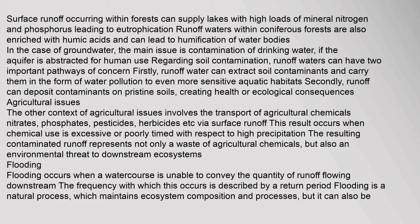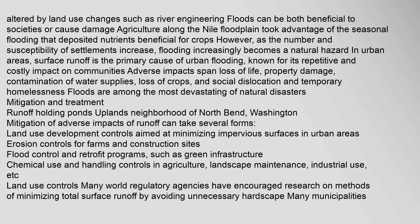Flooding occurs when a watercourse is unable to convey the quantity of runoff flowing downstream. The frequency with which this occurs is described by a return period. Flooding is a natural process which maintains ecosystem composition and processes, but it can also be altered by land use changes such as river engineering. Agriculture along the Nile floodplain took advantage of seasonal flooding that deposited nutrients beneficial for crops. However, as the number and susceptibility of settlements increase, flooding increasingly becomes a natural hazard. In urban areas, surface runoff is the primary cause of urban flooding, with adverse impacts including loss of life, property damage, contamination of water supplies, loss of crops, and social dislocation.